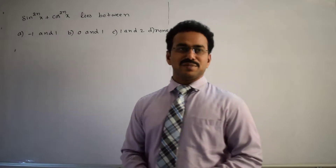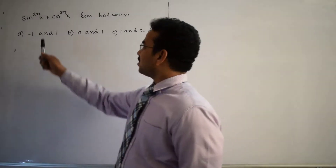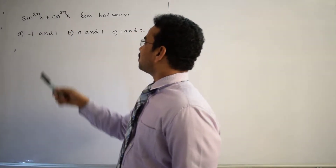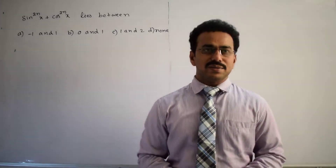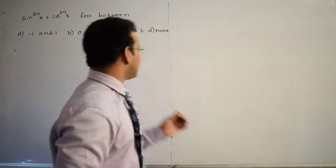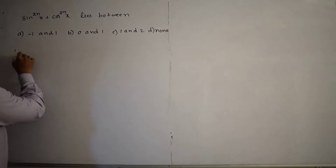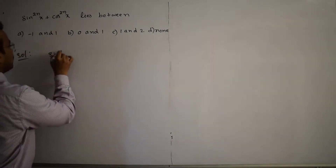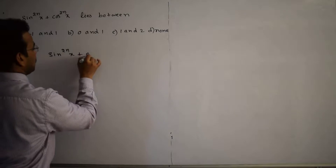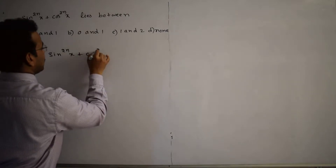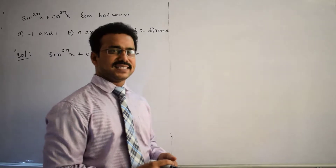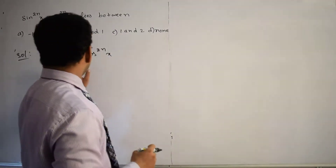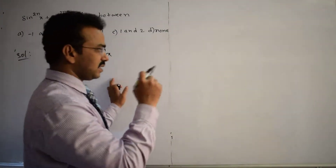Let's discuss the solution of the given question. The given expression is sin²ⁿx + cos²ⁿx — between which values does it lie? Let me write the given expression: sin power 2n x plus cos power 2n x, where the power n is present in both terms.